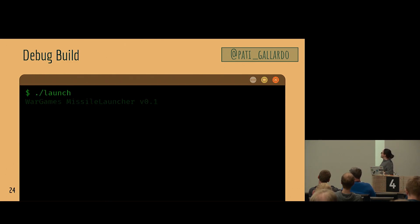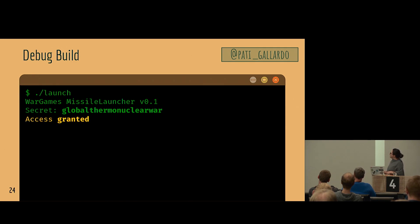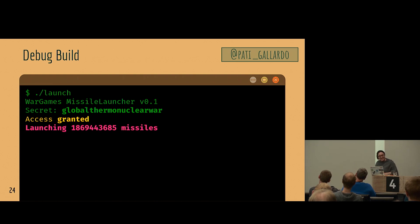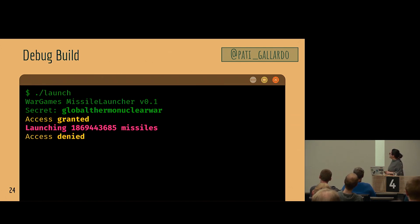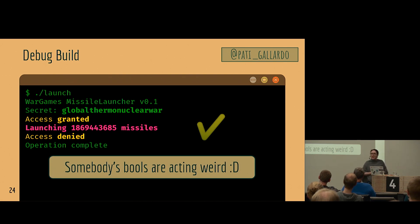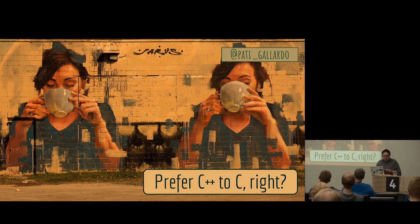Let's try the debug build to confirm we can overwrite the local variables. We try again — we got access granted! We've gotten a little bit out of our weird state. We managed to do something, though we got both access granted and access denied printed simultaneously, which is weird. Somebody's booleans are acting weird because they're both true and false at the same time — we're in undefined behavior land.